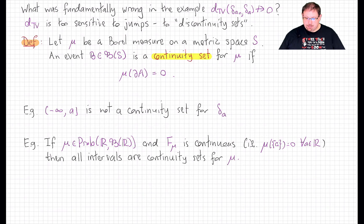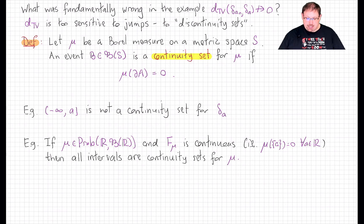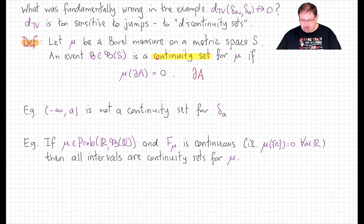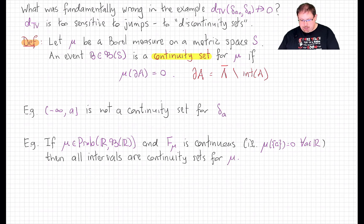What really went wrong in the example for point mass at a_n trying to converge to a point mass at a? The problem is that total variation distance is just too sensitive to jumps — too sensitive to discontinuity sets. Let's be precise about what that means. Let mu be a Borel measure on any metric space. A Borel set is called a continuity set for that measure mu if the measure of the boundary of that set is zero. The boundary of a set in a topological space is the closure of that set minus the interior of that set.